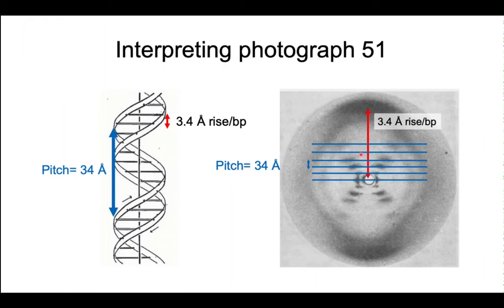The spacing between these sets of spots over here, known as layer lines, gives us the pitch of the helix. And the pitch is 34 angstroms. So the pitch is the distance going vertically here that the helix repeats itself. And now if you take the pitch of 34 angstroms and divide by the rise per base pair of 3.4, that tells us that there are 10 base pairs per turn in the helix.